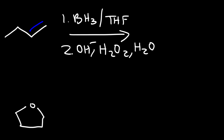This reaction proceeds with anti-Markovnikov regiochemistry. The group that we're going to add, which is an OH group, is going to go to the less substituted carbon atom of the double bond — that is the primary carbon. So the product of this reaction will be 1-butanol. This reaction doesn't proceed with any sort of rearrangements; there are no carbocations to rearrange.